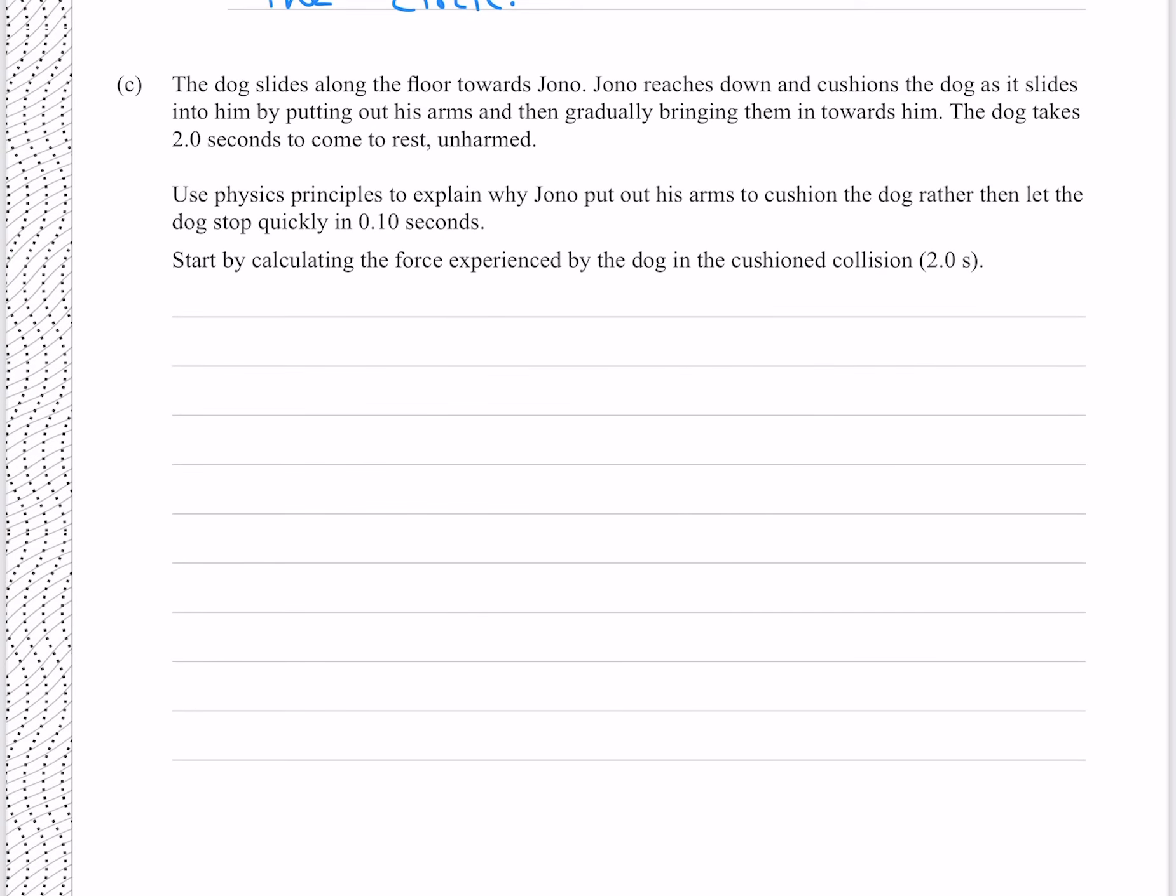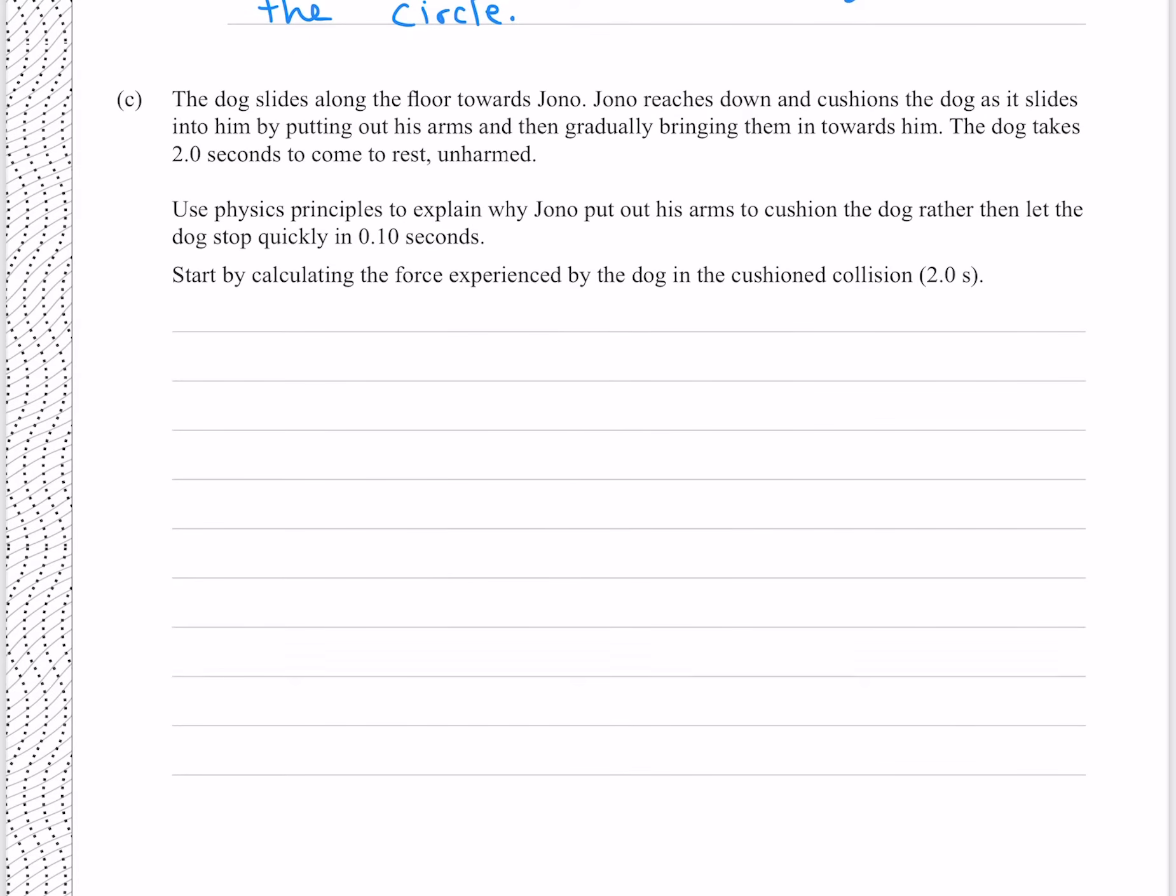The dog slides along the floor towards Jono. Jono reaches down and cushions the dog as it slides into him by putting out his arms and then gradually bringing them in towards him. The dog takes two seconds to come to a rest unharmed. Use physics principles to explain why Jono put out his arms to cushion the dog rather than let the dog stop quickly in 0.1 seconds. Start by calculating the force experienced by the dog in the cushioned collision, two seconds.